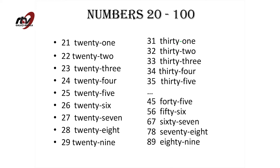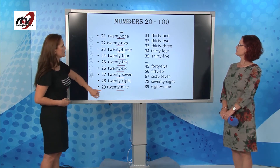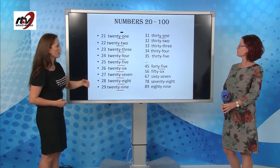The numbers between twenty and thirty have a dash — a hyphen — between the tens and the rest of the numbers. So: twenty-one, twenty-two, twenty-three, twenty-four, twenty-five, twenty-six, twenty-seven, twenty-eight, twenty-nine. It's the same with the thirties: thirty-one, thirty-two, thirty-three, thirty-four, thirty-five, and so on.